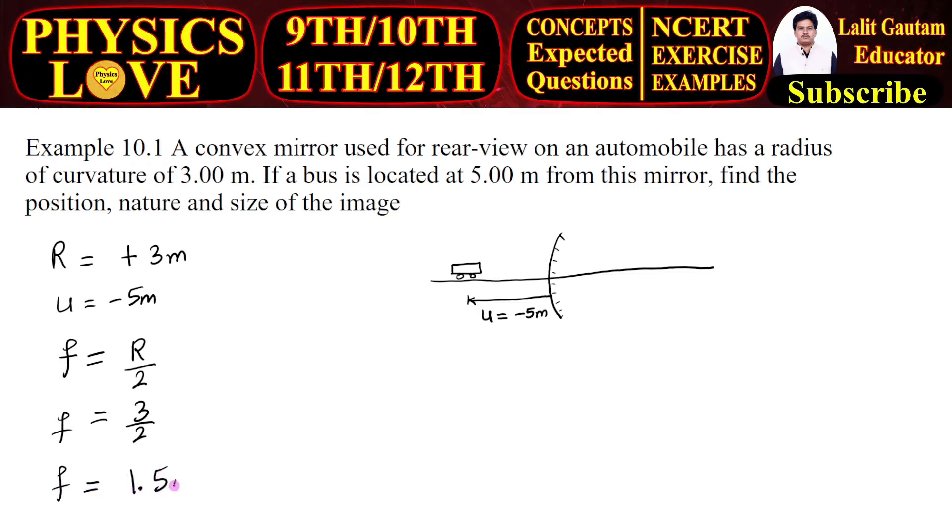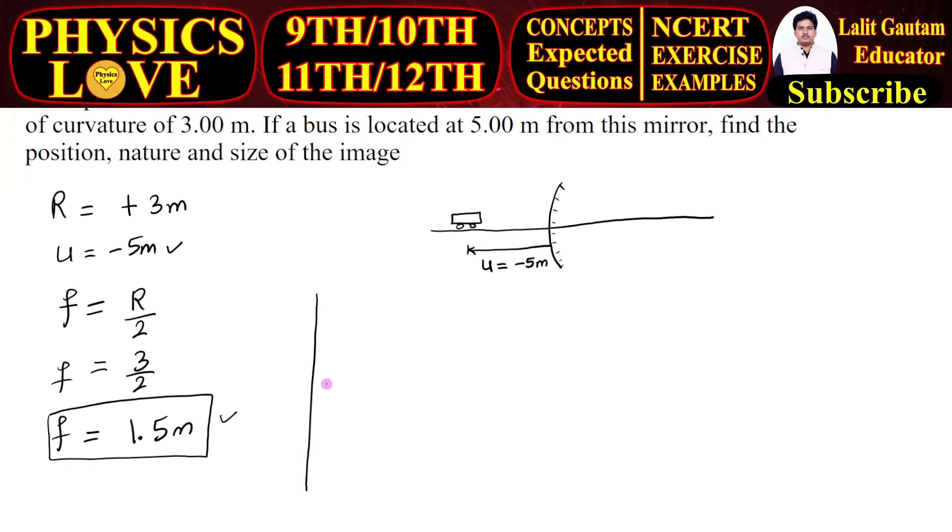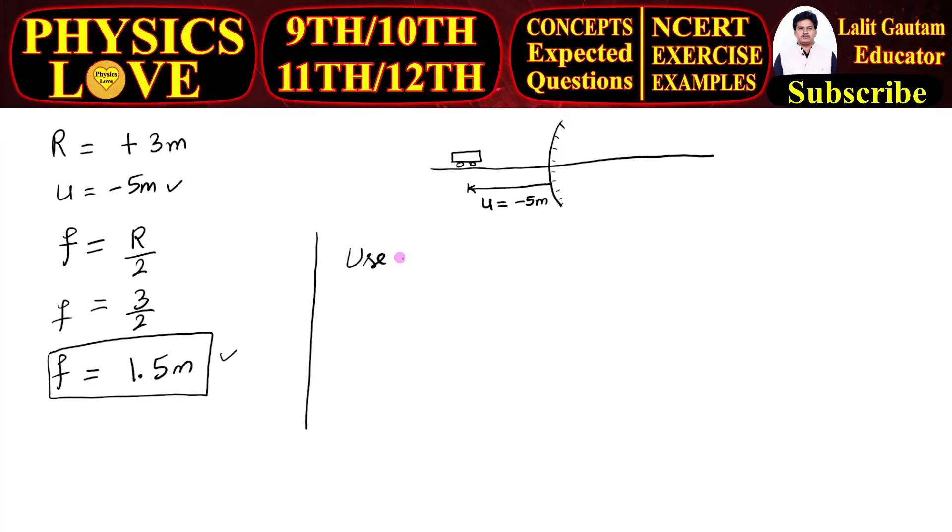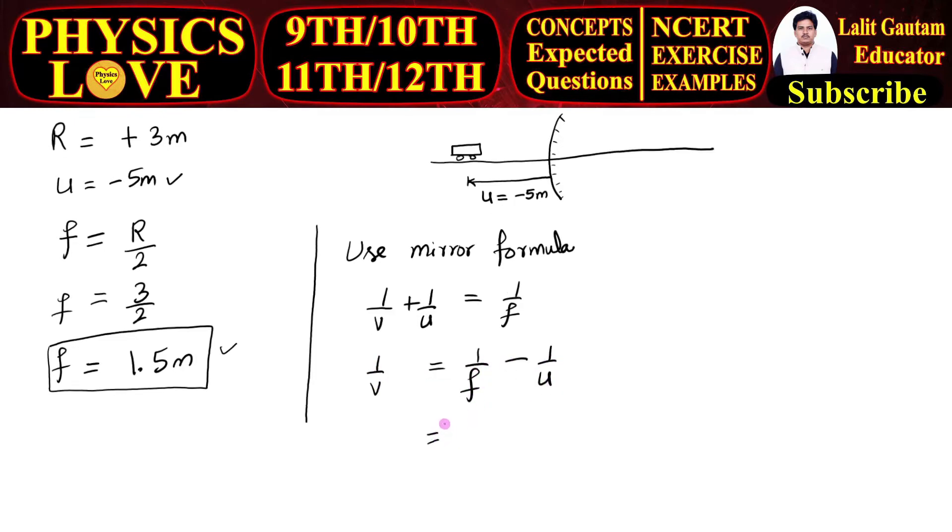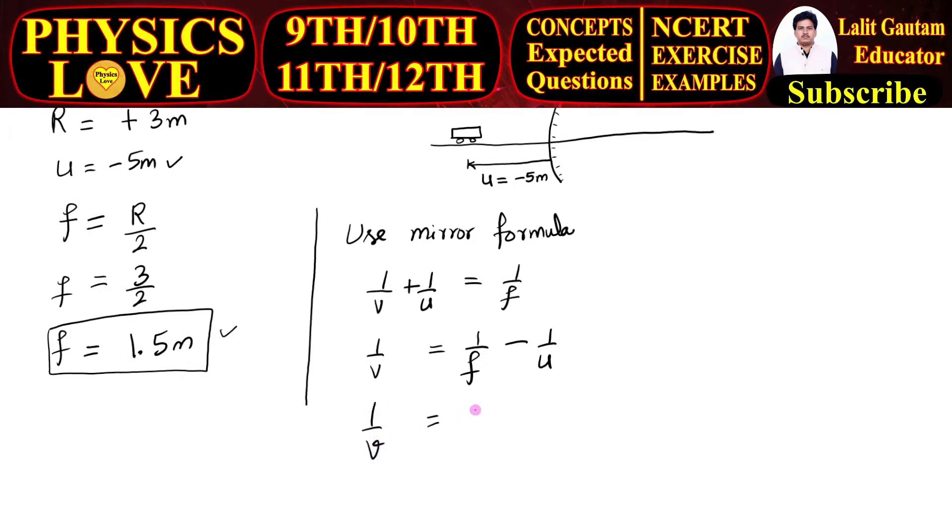Now we have the value of focal length, we have object distance, and we have to calculate image distance. So we are going to use here mirror formula. What is the mirror formula? Just recall it: 1 by v plus 1 by u equal to 1 by f. 1 by v is equal to 1 by f minus 1 by u.